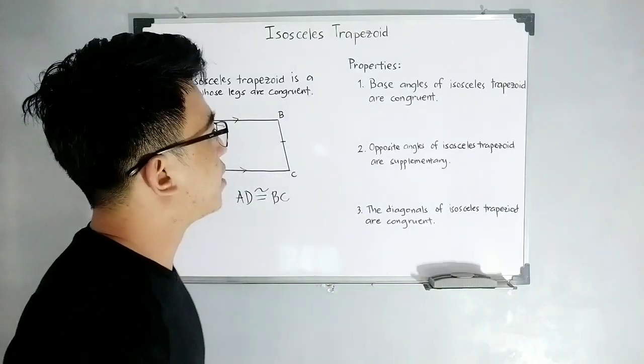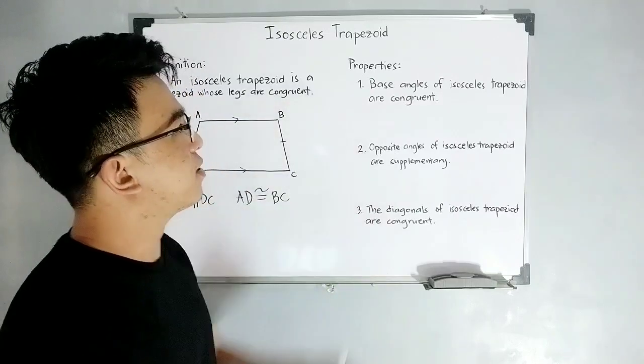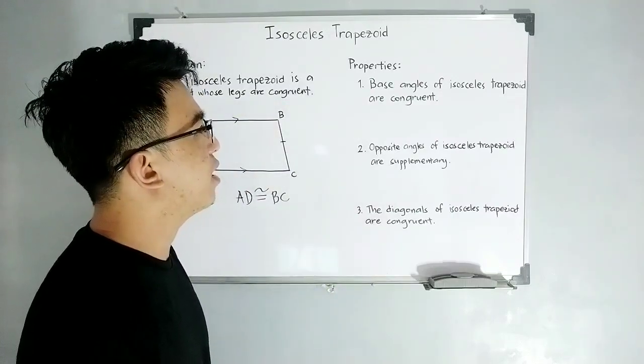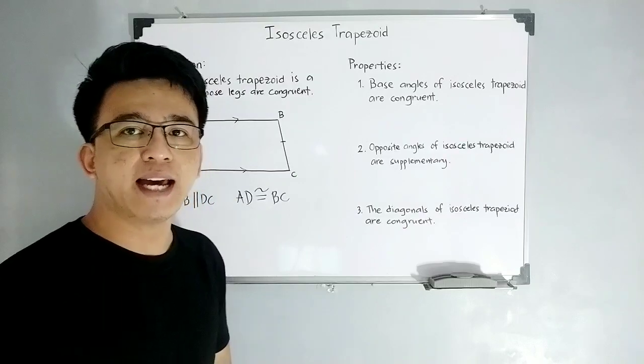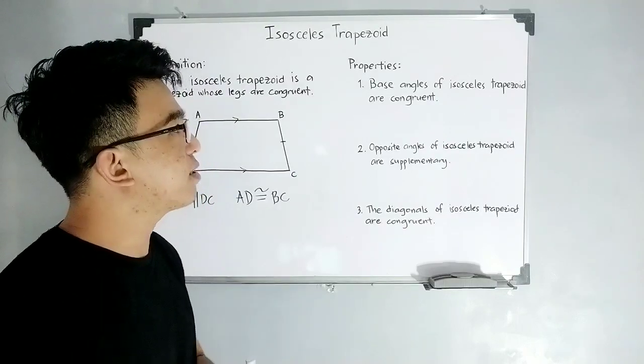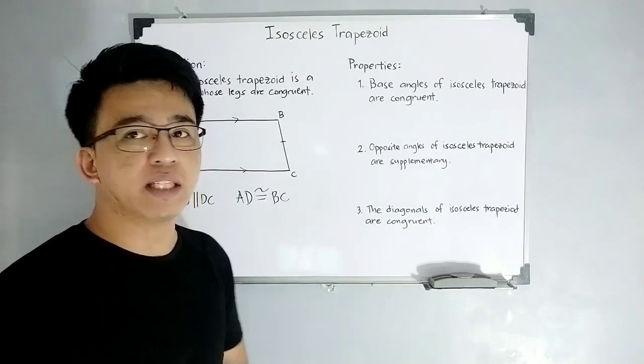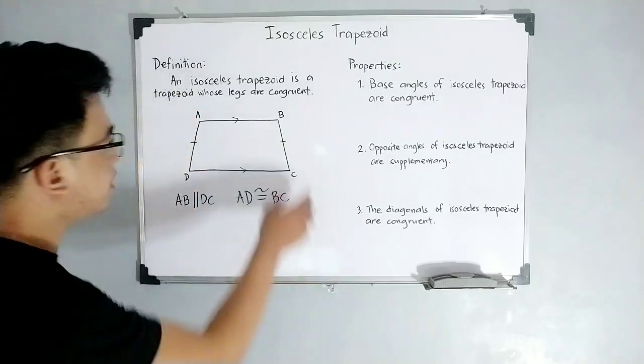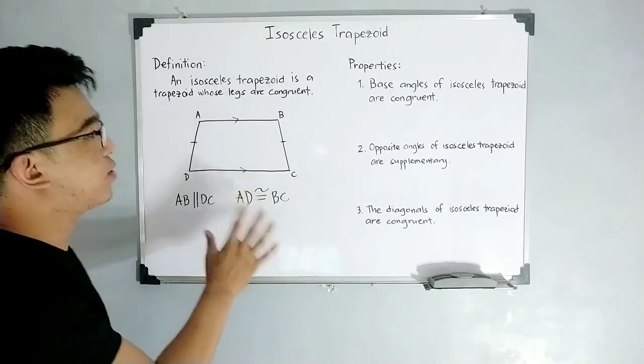And there, on the other side of our whiteboard, these are the different properties of our isosceles trapezoid. So let's start with the first property. Base angles of isosceles trapezoid are congruent. Again, base angles of isosceles trapezoids are congruent. So given this illustration, we're going to use this illustration.